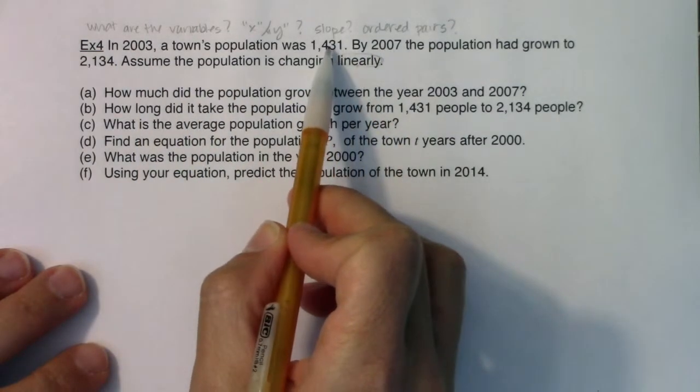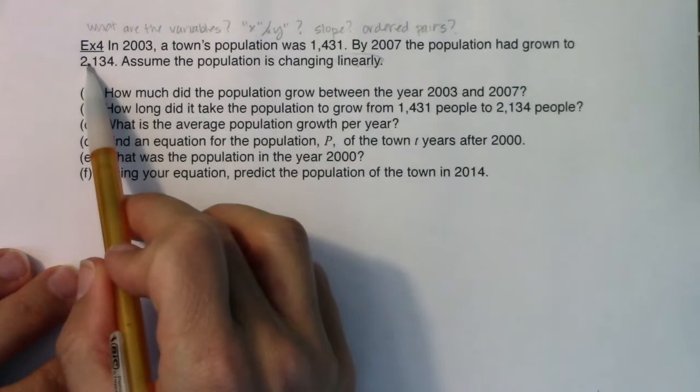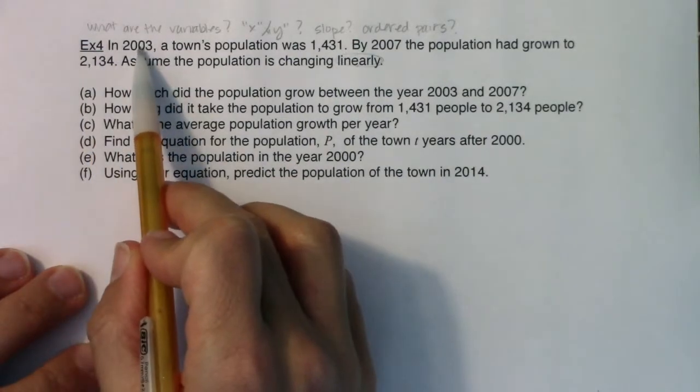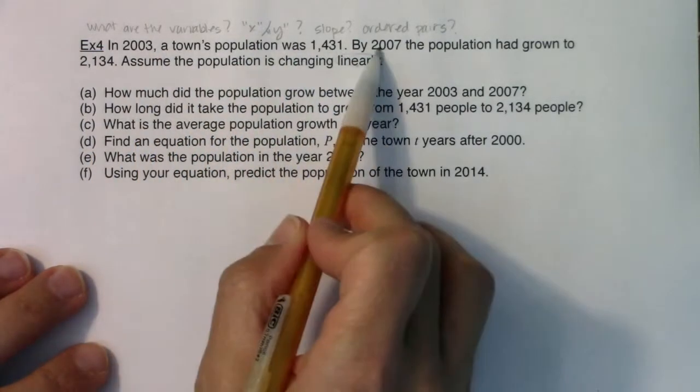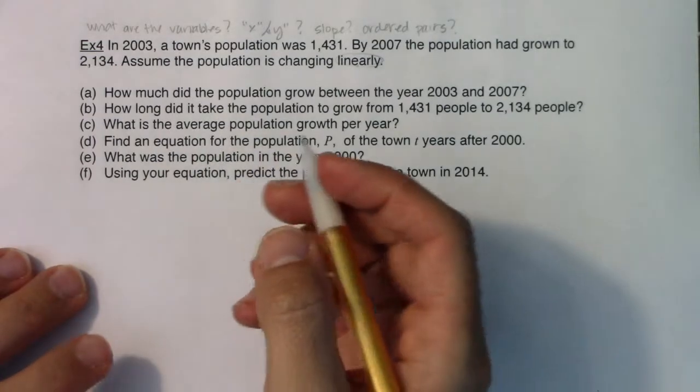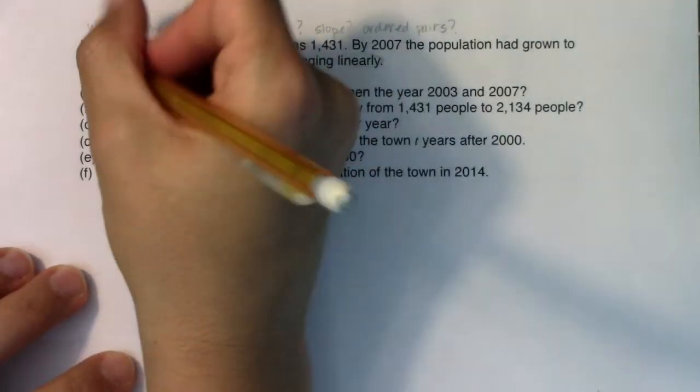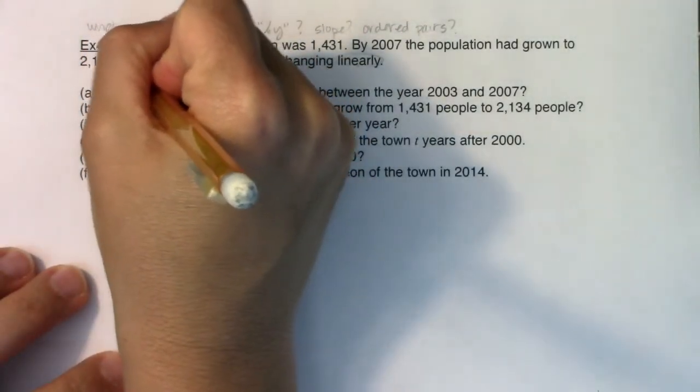I see my years changing, so time or the year is going to be my X variable. In this case, I'm going to let X equal the year and then Y will be the population.